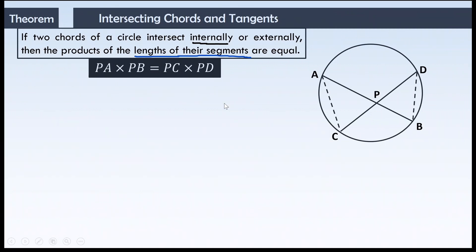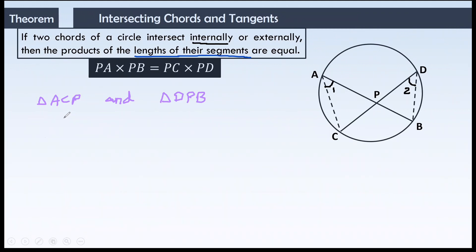Let us see the proof of this theorem. For this we will join AC and BD. Now we have two triangles: triangle ACP and triangle DPB. In these two triangles, angle A and angle D are equal because they are the two angles formed by the same arc BC. So angle CAP is equal to angle BDP — they are angles in the same segment.